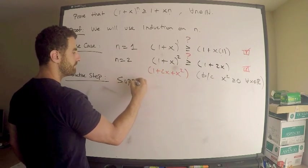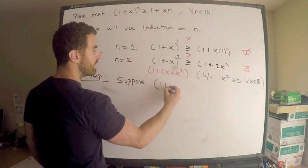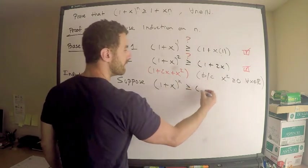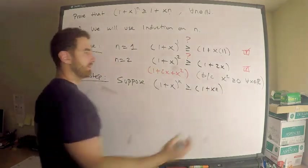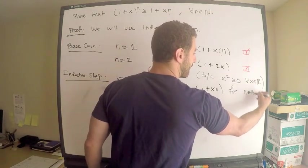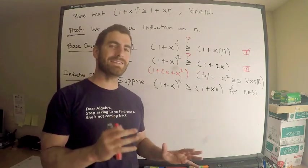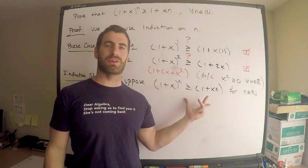So suppose that the inequality, which is the following, 1 plus x to the n is greater than or equal to 1 plus xn for some m, for n in N, right? So the idea here, and you have to really understand the logic here, is I'm fixing an n. I'm fixing a natural number, and I'm saying, let's just suppose this is true.